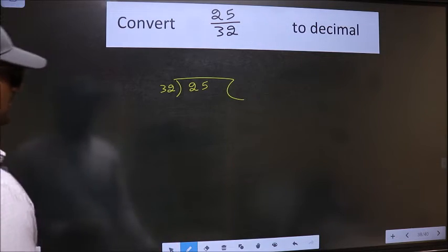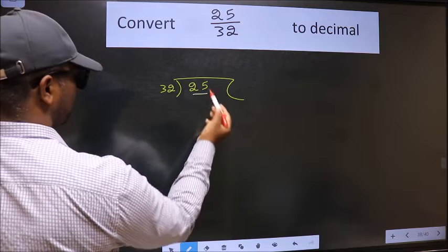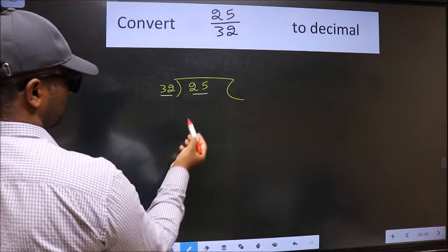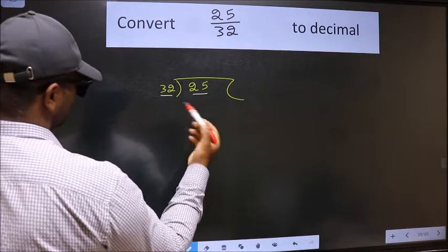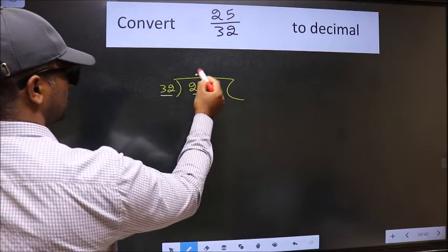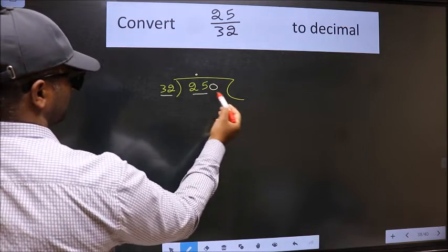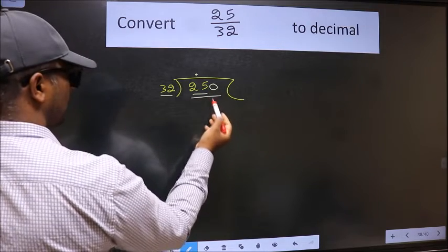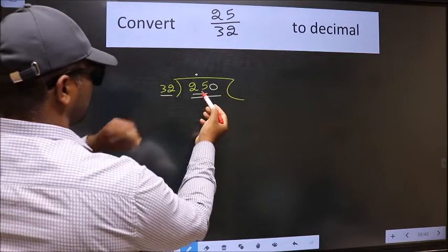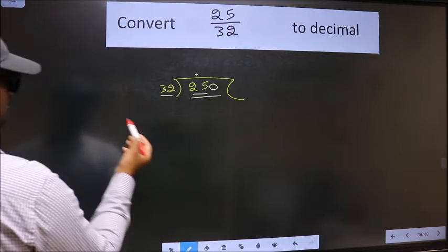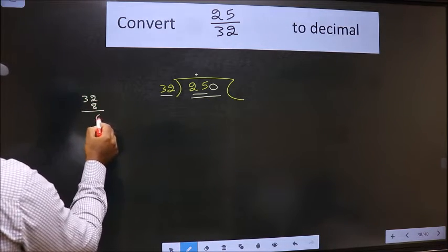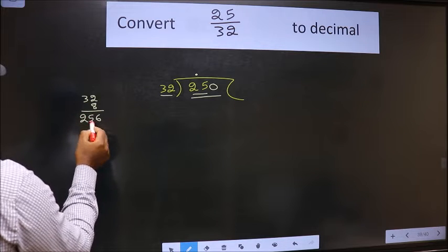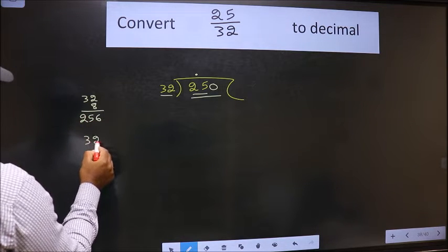Next. Here we have 25 and here 32. 25 is smaller than 32, so what we should do is put dot and take 0. So 250. A number close to 250 in the 32 table is... Let us check with 8. 8 times 2 is 16, 8 times 3 is 24, so 256. It is beyond. So take 7.